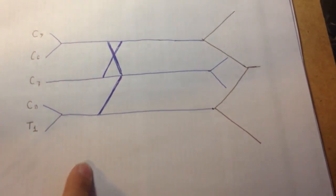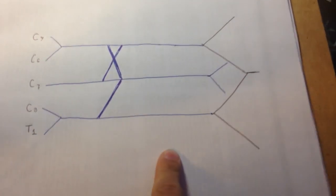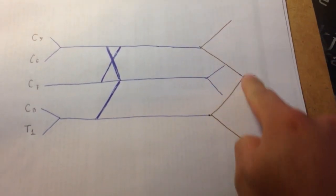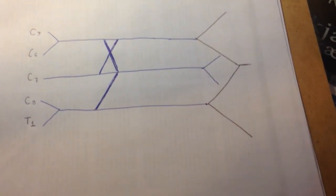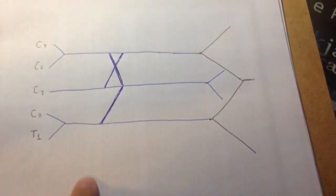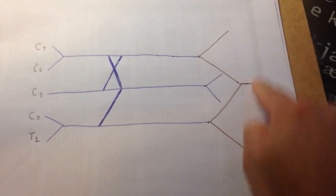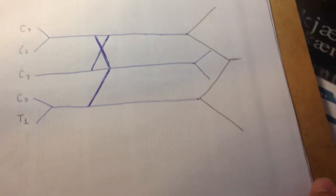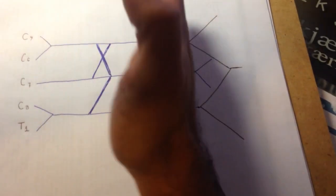This here are the trunks. This here are the cords. And this here are the branches, I believe, or the nerves. Just the nerves. So, trunks, cords, and branches or nerves.